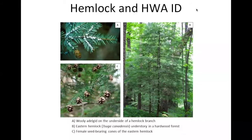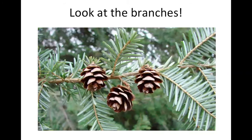Now it's time to go over the ID characteristics of hemlock and hemlock woolly adelgid, because if you're going to go out and find the adelgid and report it, you need to know what you're looking for in the hemlock itself. Here is a picture of a hemlock tree profile — the branches just aren't as dense as pines or spruces; it has a very feather-like appearance. We'll also be talking about the little tiny pine cones and other clues to look for, and of course the white cottony masses at the end of this ID section.